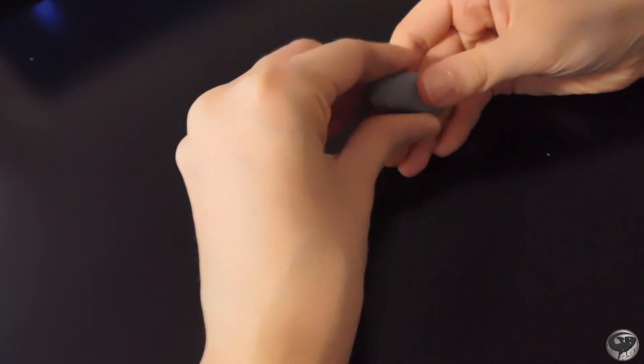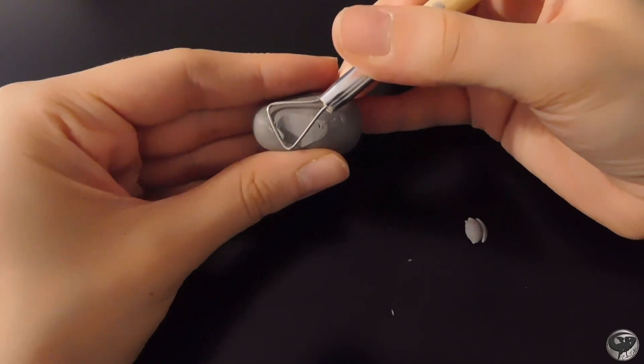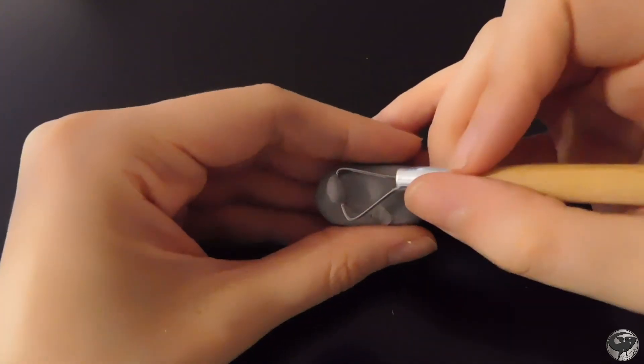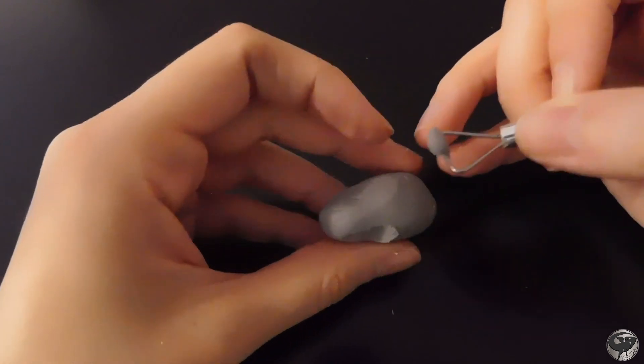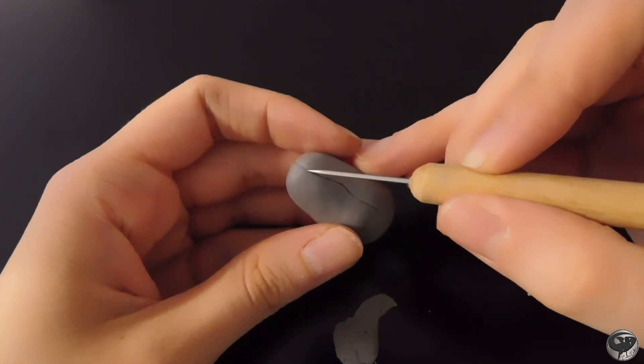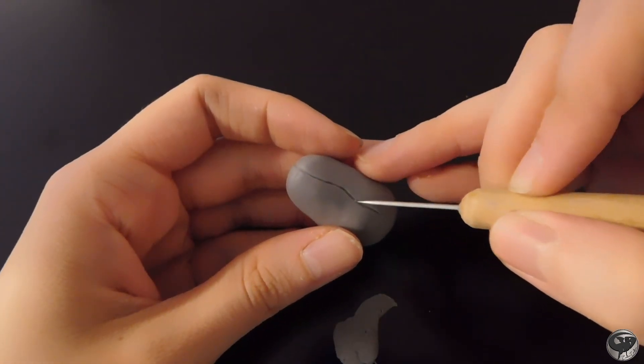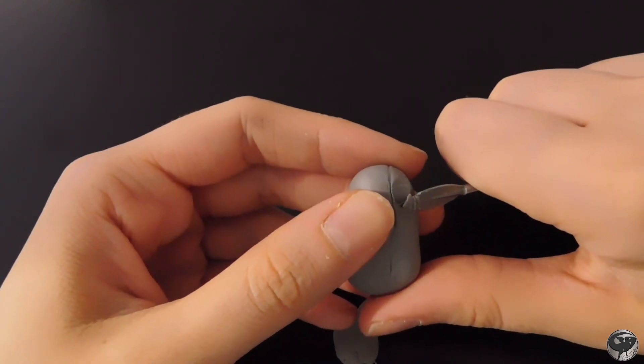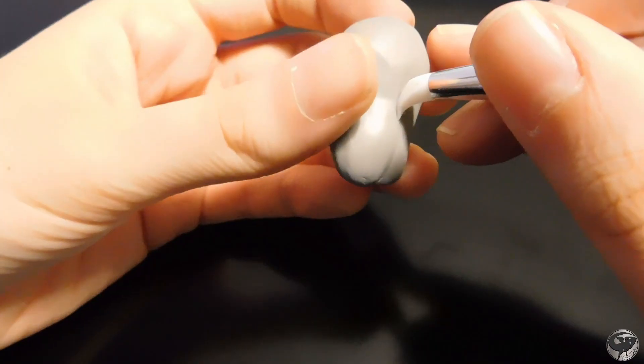Then I went on to sculpt the heads. Although there is some debate about Nanuqsaurus's size, it is certain that it was much smaller than its famous cousin Tyrannosaurus Rex.